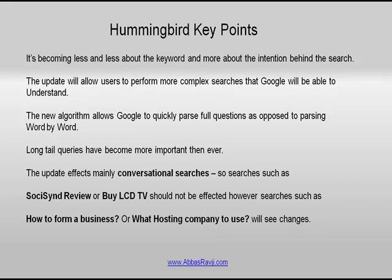The update will allow users to perform more complex searches that Google will be able to understand. In the past, we might be performing searches using just two or three keywords to filter through results until we find what we're looking for. But with this new Hummingbird algorithm change, Google is now able to understand more complex searches performed by users. The new algorithm allows Google to quickly parse full questions as opposed to word by word — it's much more intelligent and efficient with long and complex queries.